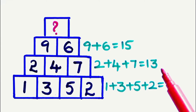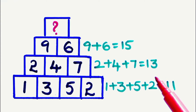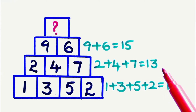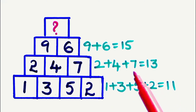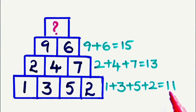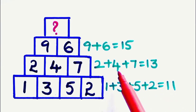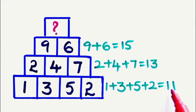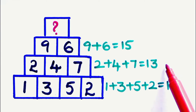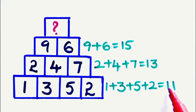Now children, let us observe the sum of the numbers in each row. The sum of the first row is 11, and the sum of the second row is 13. How much is the increase in the sum of the second row over the first row?